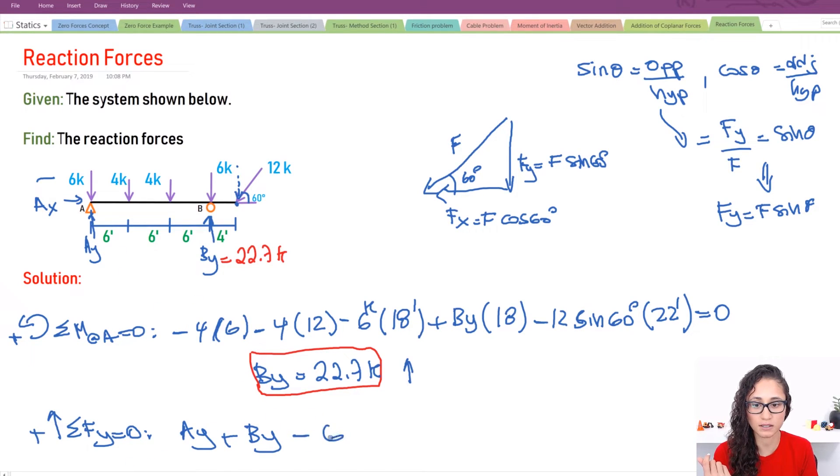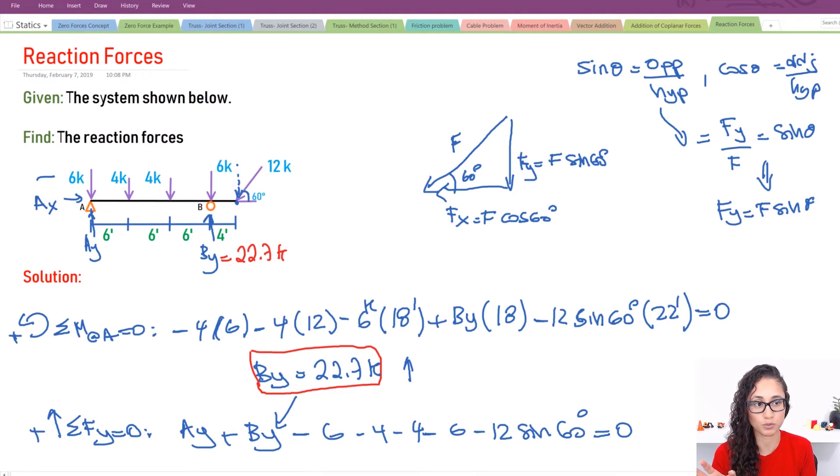Then I have minus six. Everything else is going to be negative because they're all going the opposite direction of what we selected here. So I have minus six, minus four, minus four, minus another six. And I have minus 12. Don't forget the 12 components, Fy. So I have minus 12 times sine 60. This is equals to zero. And then you substitute By with 22.7.